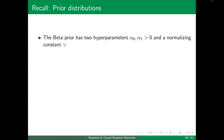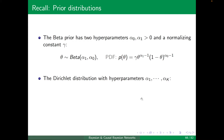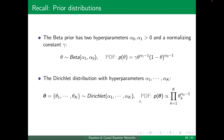Recall from parameter learning the beta and Dirichlet distributions. The beta prior has two hyperparameters: theta following beta(alpha_1, alpha_0). The PDF is a normalizing constant times theta^(alpha_1 - 1) times (1 - theta)^(alpha_0 - 1). The Dirichlet distribution is a generalization: Dirichlet(alpha_1 to alpha_k), with the product of theta_k^(alpha_k - 1).